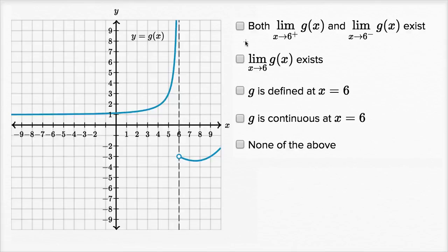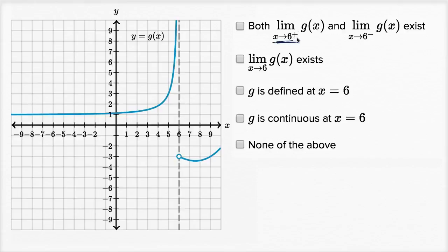Let's look at the first statement. It says both the limit of g of x as x approaches six from the right-hand side, and the limit as x approaches six from the left-hand side of g of x, exist. So let's first think about the limit of g of x as x approaches six from the right-hand side, as we approach six from values greater than six.